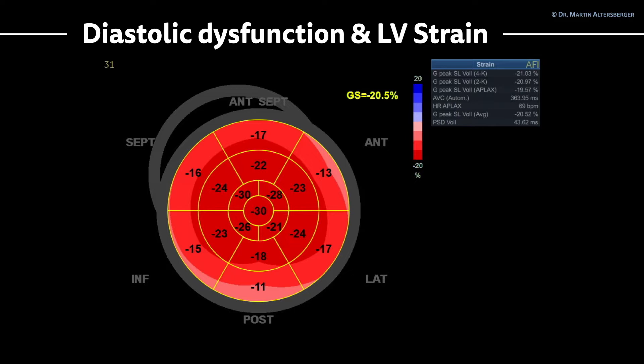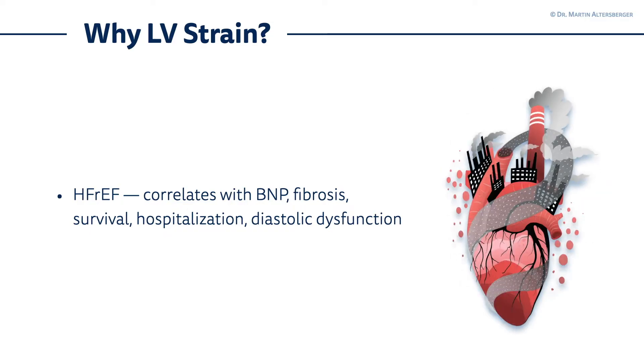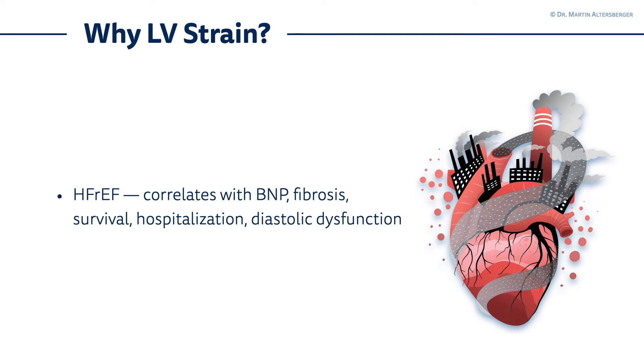The global strain, or GS, is minus 20.5%. Overall, everything below minus 18 — so minus 19, minus 20, minus 21 and so on — is normal. Minus 16 to minus 18 is borderline, and below minus 16 is definitely an abnormal global longitudinal strain of the left ventricle. But why would we measure the LV strain in diastolic dysfunction?